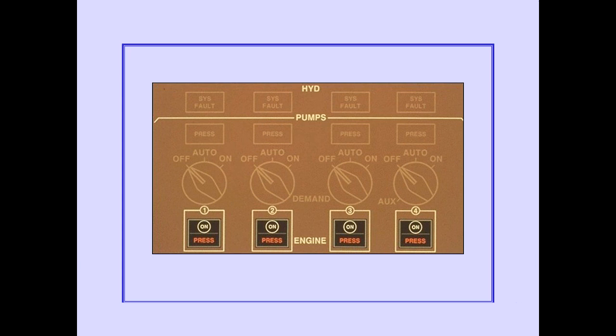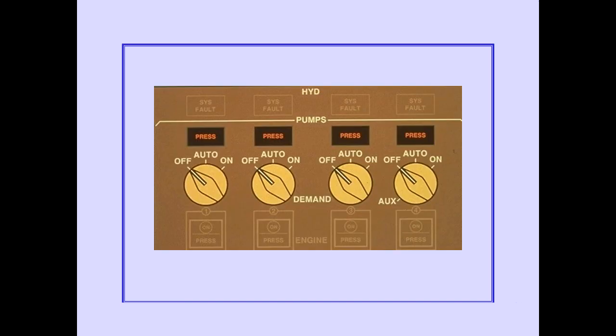The engine pump switches control the primary source of pressure for the hydraulic systems. Each engine pump has a low pressure light. Demand pumps provide additional pressure when system demand is high or when engine pump output pressure is low. Each demand pump has a low pressure light.